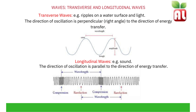Transverse waves, for example ripples on a water surface and light waves, have the direction of oscillation perpendicular to the direction of energy transfer, similar to moving a slinky or a rope up and down. They have a crest or peak which is the maximum point of the wave, a trough which is the minimum point, amplitude which is the height of the wave, and wavelength measured from one point on a wave to the same point on the next wave. Wavelength is measured in meters.